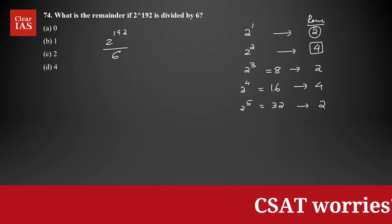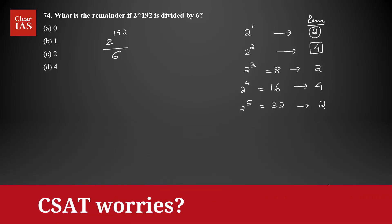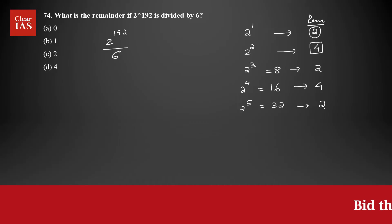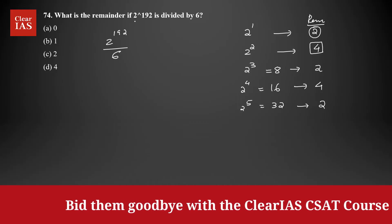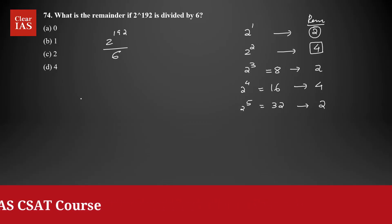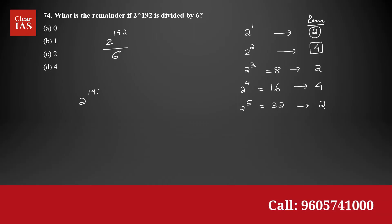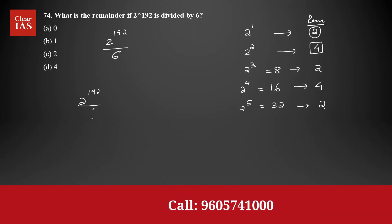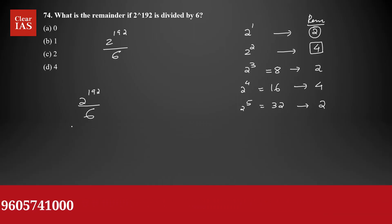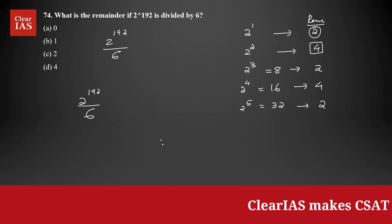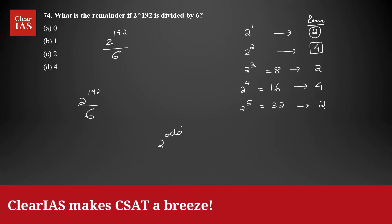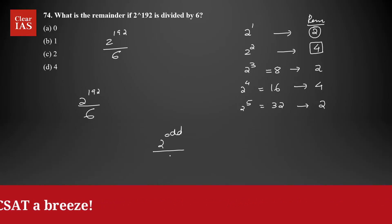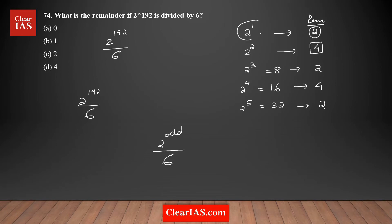The pattern is 2, 4, 2, 4 — it repeats like that. Whenever you have 2 to the power of an odd number and divide by 6 — such as 2 to the power 1, 3, or 5 — the remainder is 2.